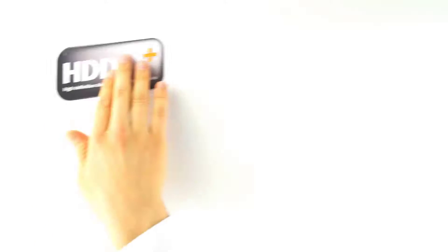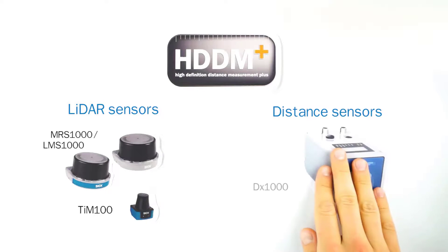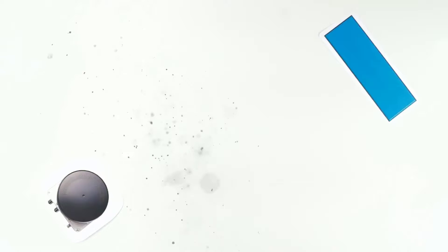But that's not all. The new HDDM Plus laser scanners such as the MRS1000 and distance sensors by SICK have a higher sensitivity and the ability to deal easily with several echoes, which can be caused by reflection of those laser lights on dust, fog, rain or falling snow.